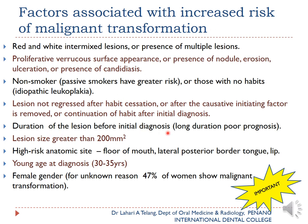Duration of the lesion before initial diagnosis also matters — longer the duration, poorer the prognosis. A patient with a lesion since three months ago has less chance of malignant transformation than one with a lesion since two years ago. Lesion size greater than 200 mm² or two centimeters should be biopsied immediately. High-risk anatomic sites include the floor of the mouth, lateral and posterior border of the tongue, and the lip — possibly related to the vascular supply of these areas.